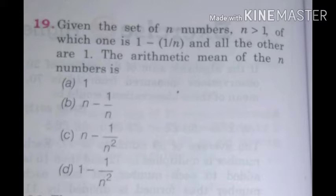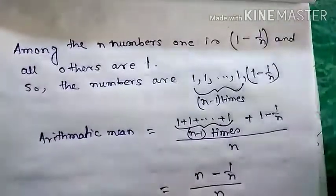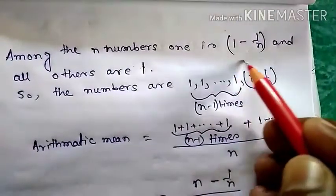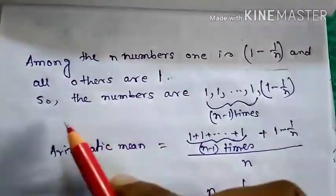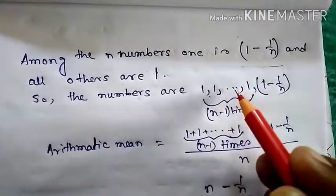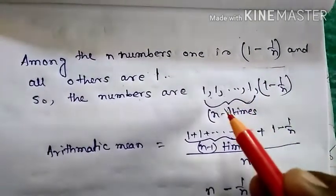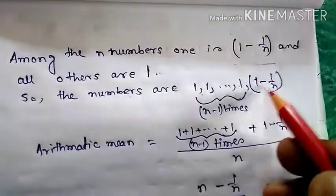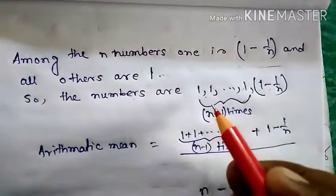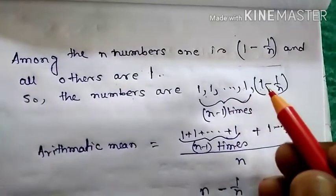Among the n numbers, one is 1 minus 1 by n and all others are 1. So the numbers are 1, 1, dot dot, 1. There are n minus 1 numbers of 1, and the nth number is 1 minus 1 by n. So these are the n numbers where n minus 1 times 1 occurs and the 1 minus 1 by n is the other number.